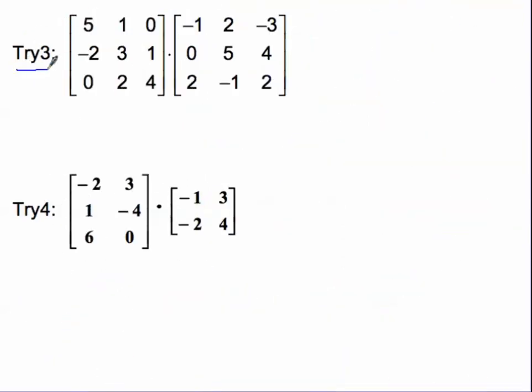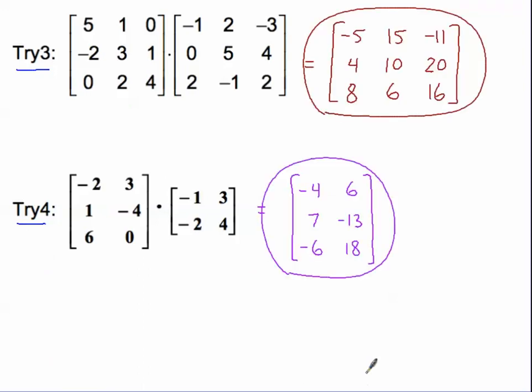There are two more try problems — Try 3 and Try 4. Please pause the video now and try these two problems, then start the video back up to check your answers. Hopefully you got all of the elements correct. If you got a row or column wrong, it might be because you were looking at the wrong thing. Go back and try them again if needed.